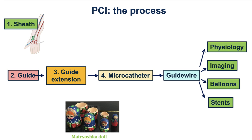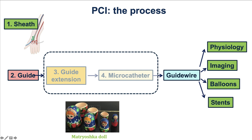One way to think of a microcatheter is as an additional telescoping system. For most interventions, we have a sheath — the first telescoping layer — and a guide catheter through which guide wires and various devices are advanced. Two additional telescoping layers can be added: a guide extension, discussed in video 30.3, and a microcatheter for advancing a guide wire. In that respect, this assembly resembles a Matryoshka Russian doll.